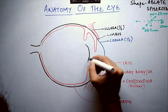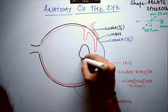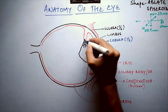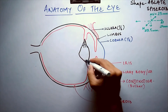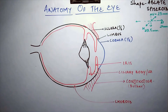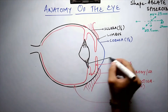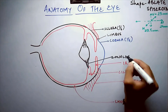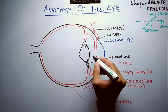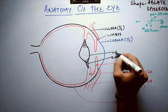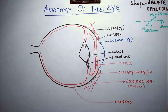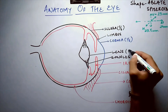A lens is placed inside the eye anteriorly, held by suspensory strings attached to the ciliary body or muscles, called zonules. These zonules hold the central lens, which is biconvex in nature.